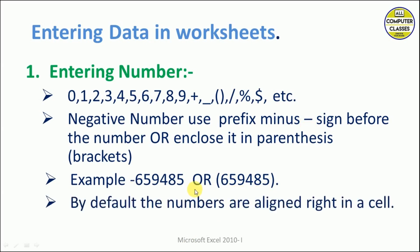Whenever we enter a number, by default they are all aligned to the right side. So we learnt four things about entering numbers: numbers include digits and some symbols; for a negative number we can use the negative sign or brackets; and by default, numbers are aligned to the right side of the cell.